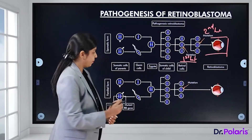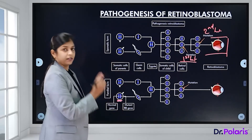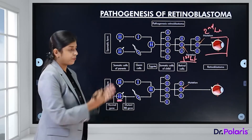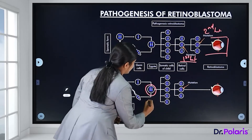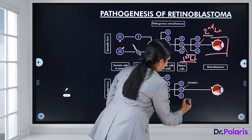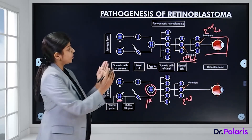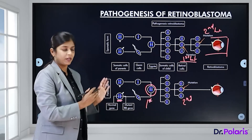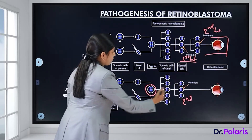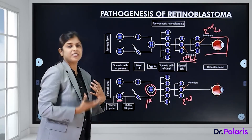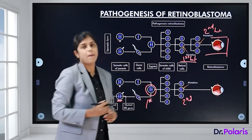In the familial form, one gene is already mutated — a mutant RB gene is present at birth, which counts as the first hit. Sometime later in life a second hit occurs, leading to tumour development. Familial tumours manifest earlier in age, whereas sporadic forms take a little longer time for manifestation.